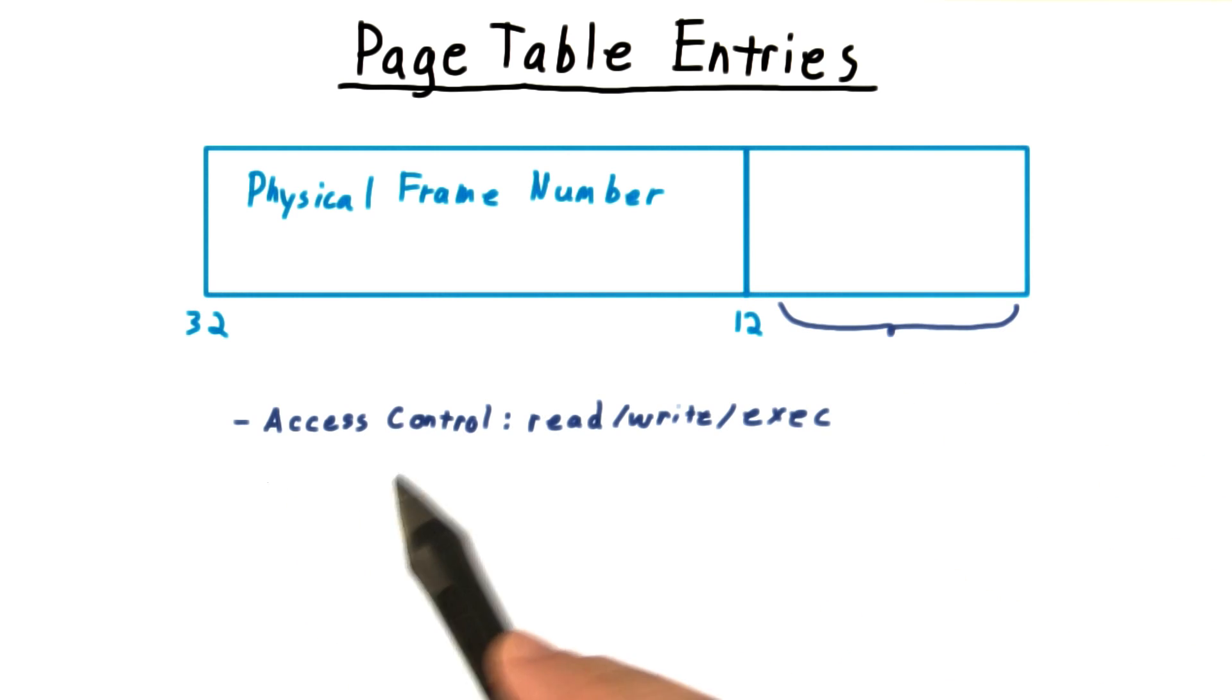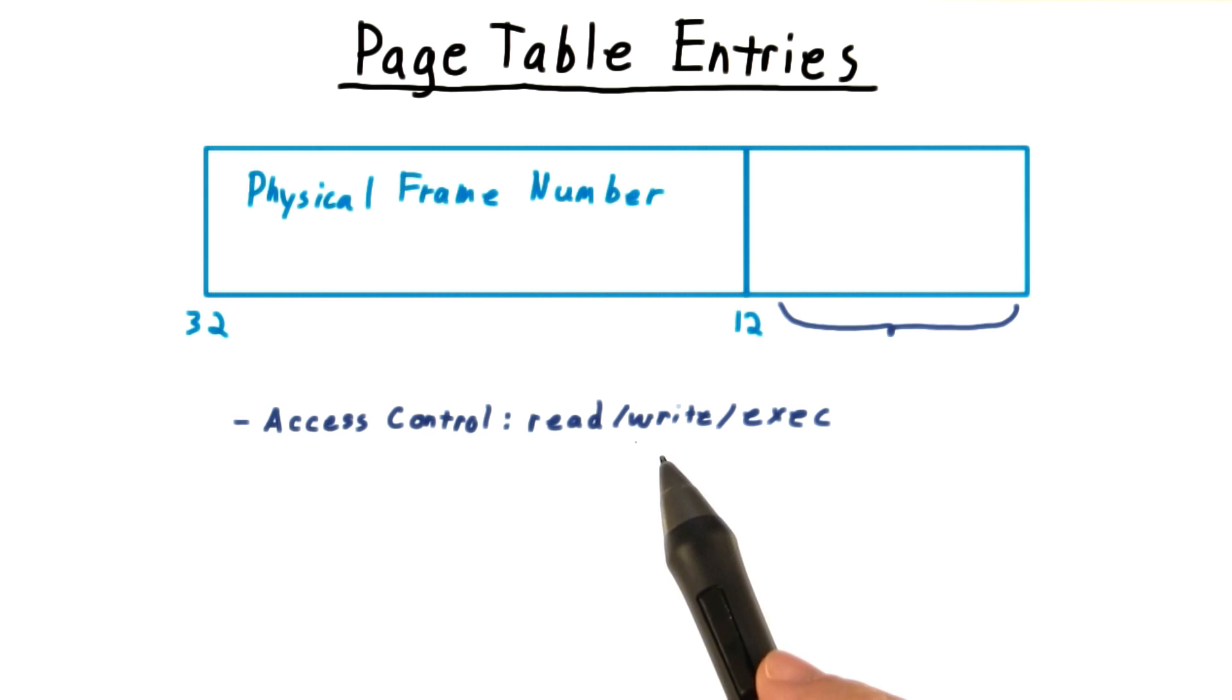Some of the more important are things like access control. Do we have read, write, or execute permissions on this memory? If we don't, then when we come to this page entry, an access violation or segmentation fault will occur.